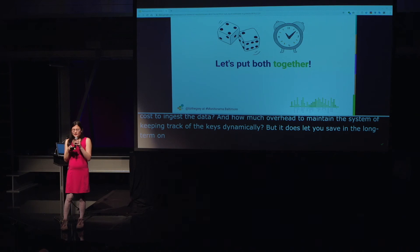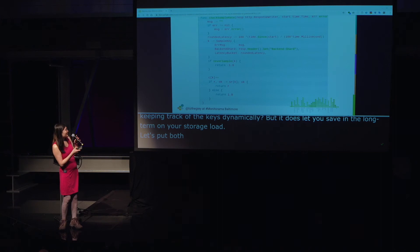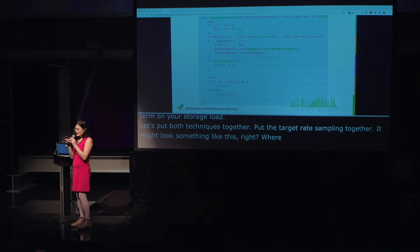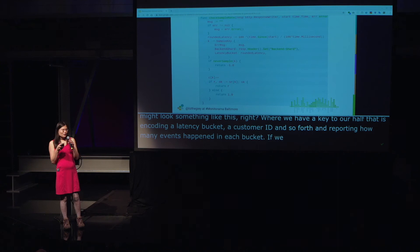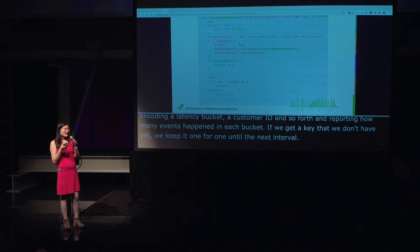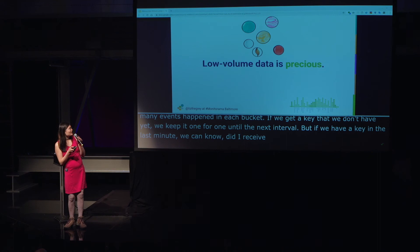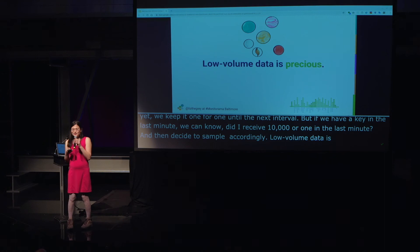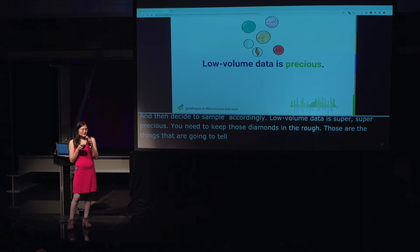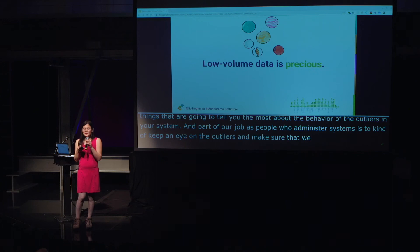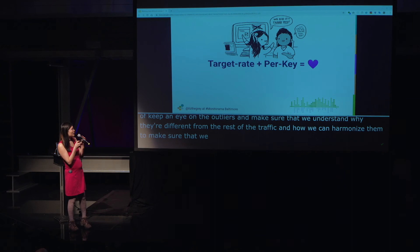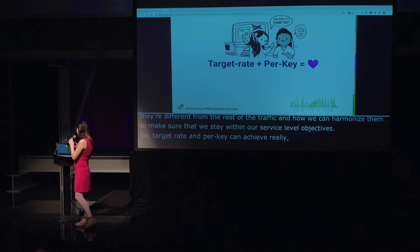Let's put both techniques together: target rate sampling combined with per-key sampling. This might look like a hash key encoding a latency bucket and customer ID, recording how many events happen in each bucket. If we get a key we don't have yet, keep it one-for-one until the next interval. Our low-volume data is super precious — keep those diamonds in the rough, because those tell you the most about the behavior of outliers in your system. Part of our job is to keep an eye on outliers, understand why they're different from the rest of the traffic, and harmonize things to stay within our service level objectives. This is known as stratified sampling in statistics.